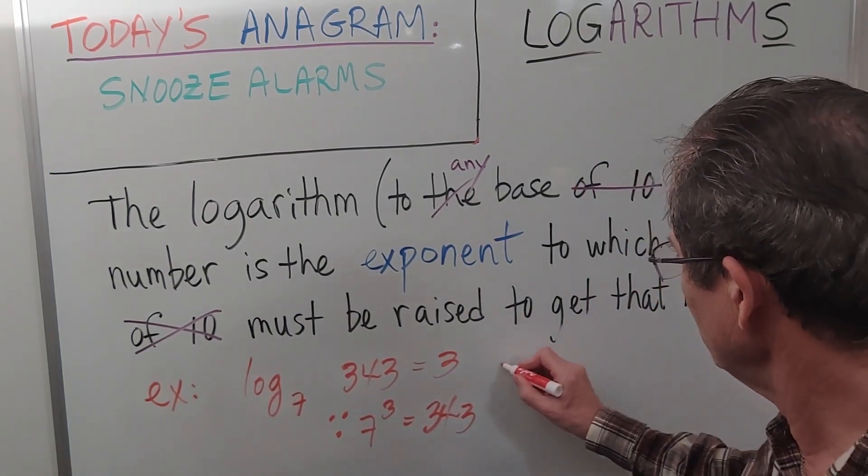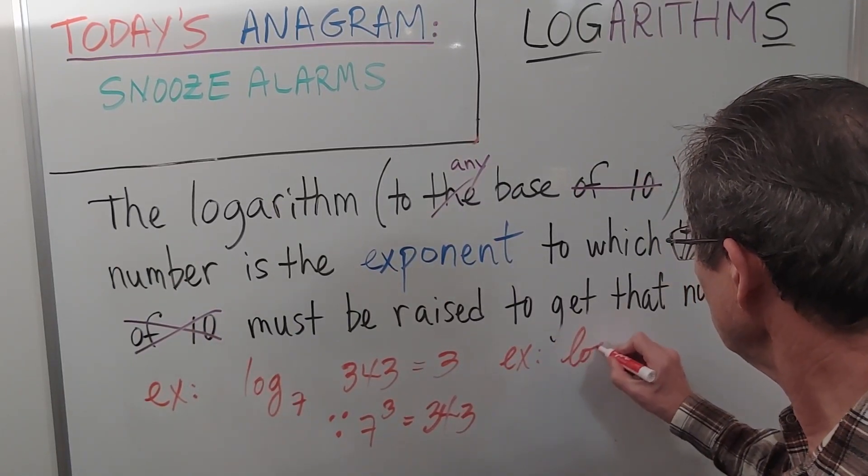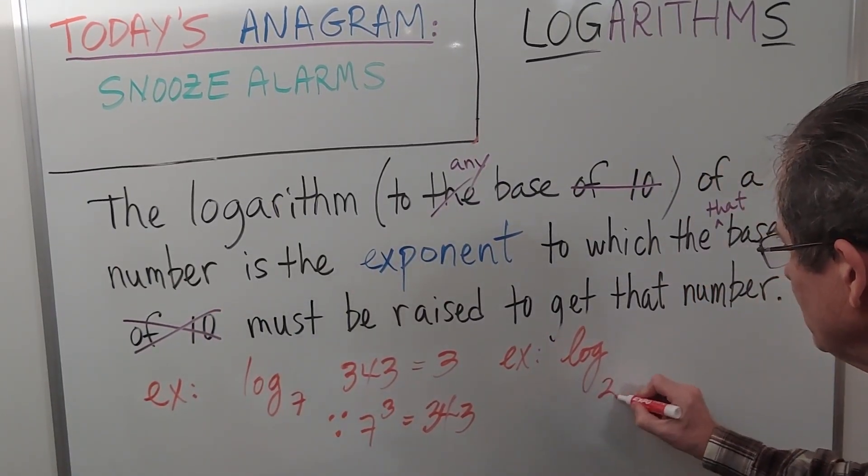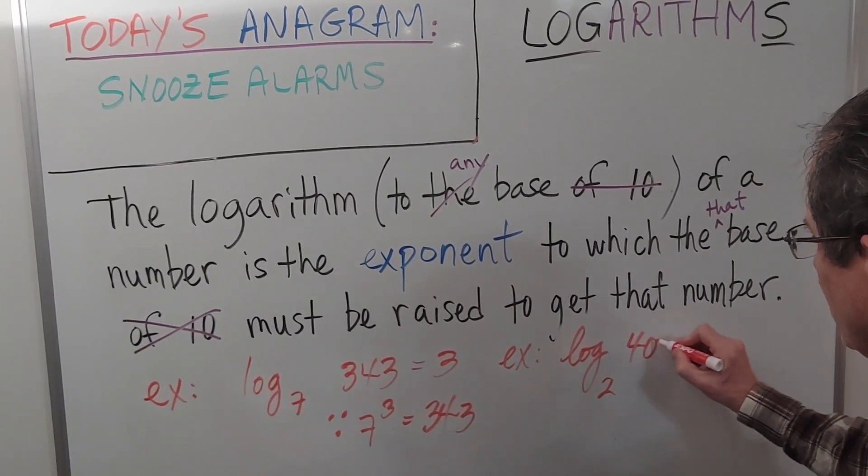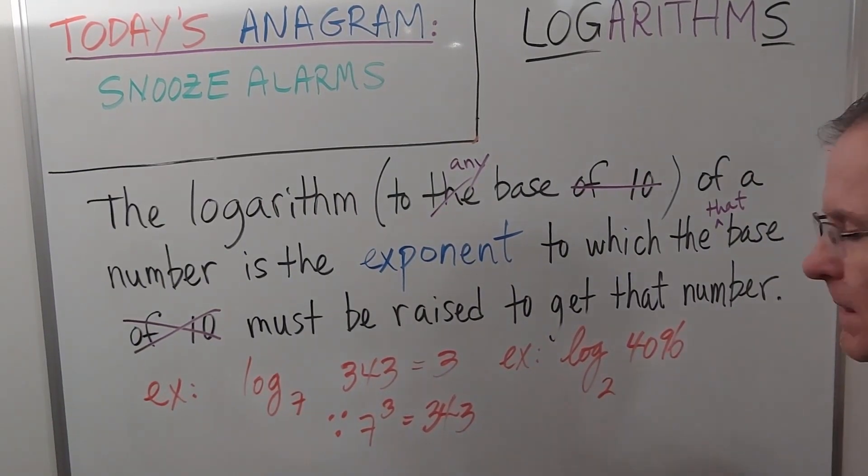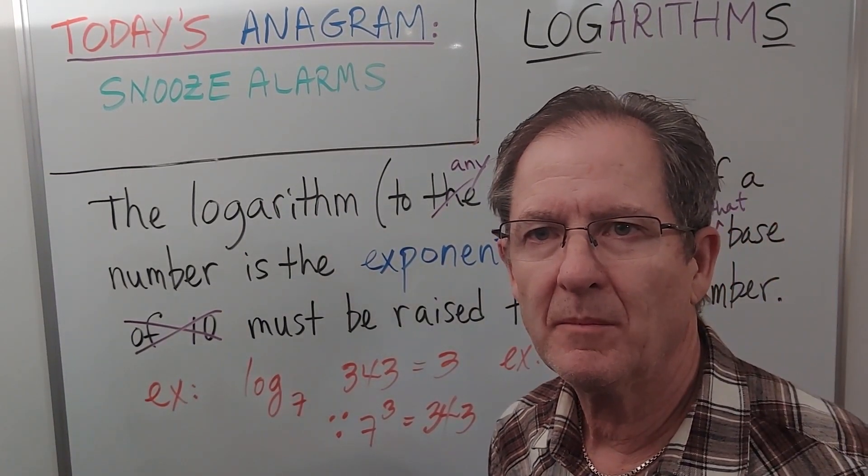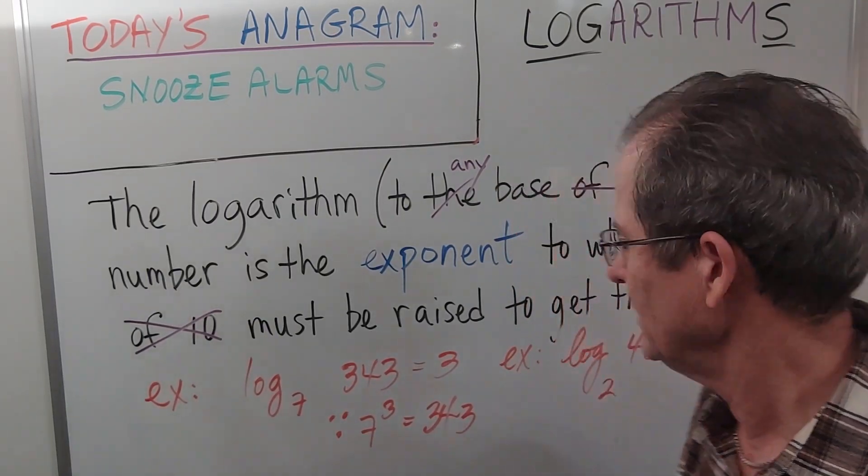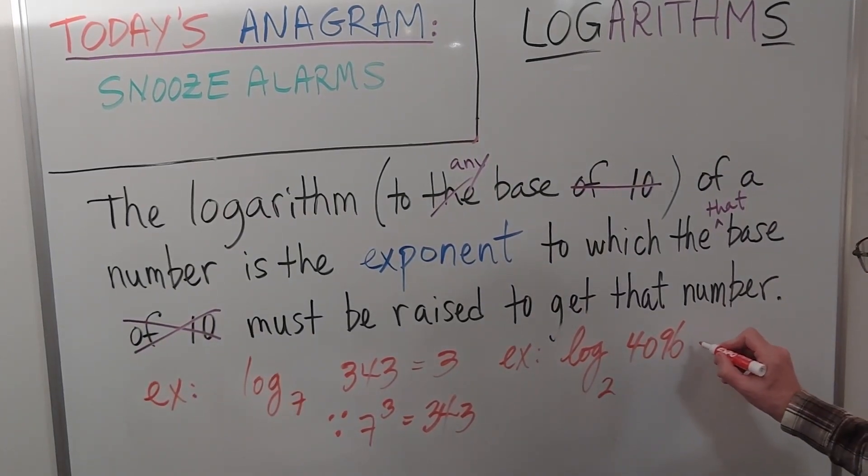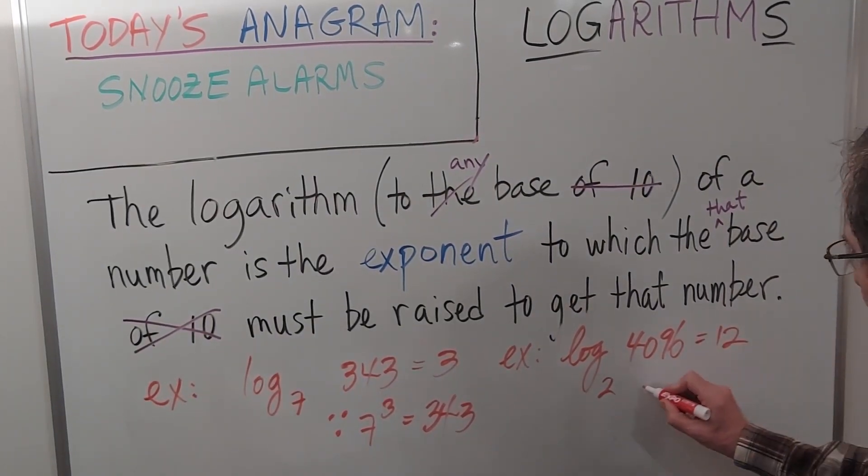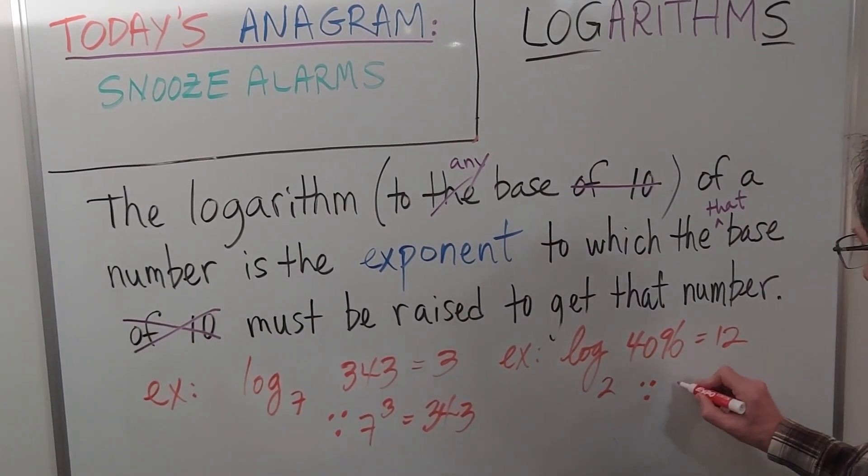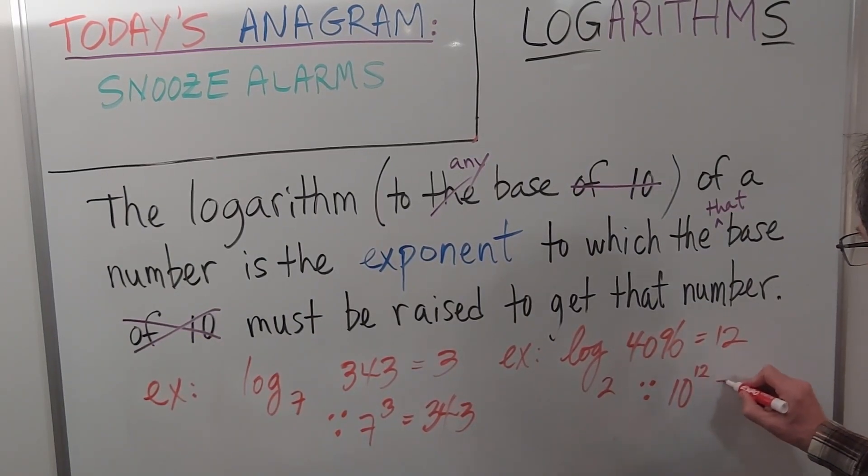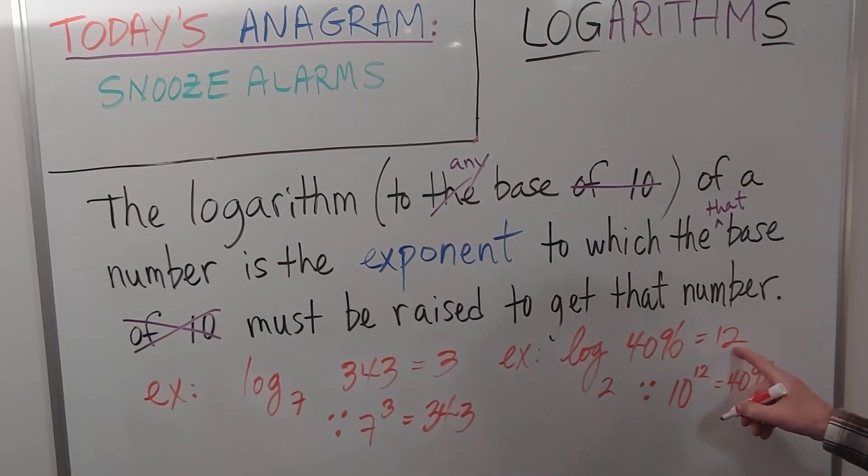How about this one? The log to the base 2 of 4096. You'll probably recognize that number as a power of 2. It's often called 4k because it's approximately 4000. Well, that's equal to 12 since 10 to the 12 equals 4096.